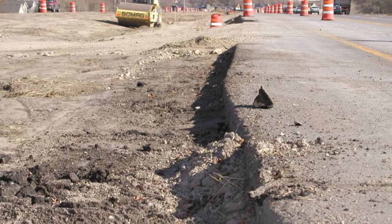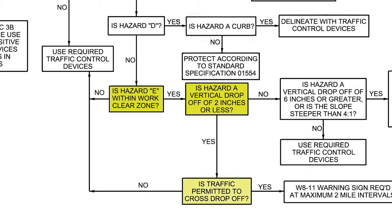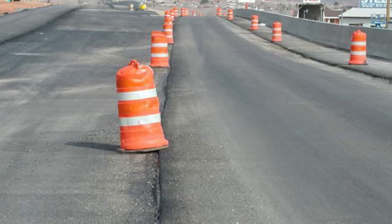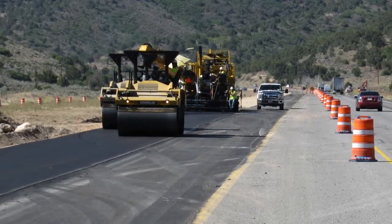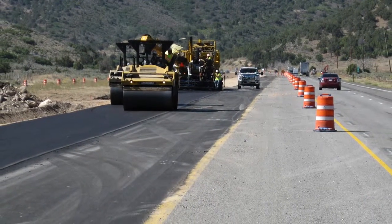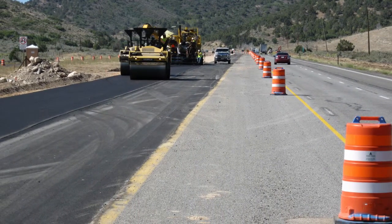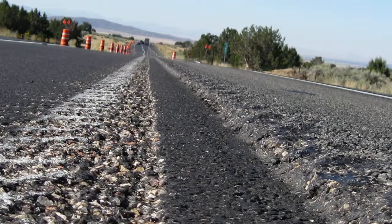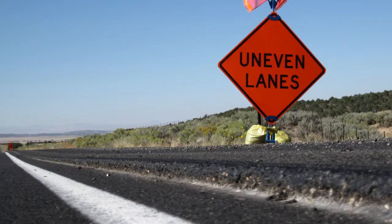In most circumstances, to avoid issues with Type C hazards — positive protection for workers — you will need to place the channelizing devices outside twice the work clear zone. If the hazard is less than 2 inches, we need to ask: is traffic permitted to cross the vertical grade separation? If no, traffic control devices are required to delineate the travel path. In this case, workers will be working within the work clear zone as the next layer of asphalt is placed, so a Type C hazard will need to be addressed. Your accumulated points will fall within the 20-to-30 point range, requiring positive protection devices or other mitigation efforts such as reducing the traffic device spacing to one half. If the hazard is less than 2 inches and traffic is permitted to cross the vertical grade separation, the W8-11 uneven lane sign will be required at maximum 2-mile intervals.